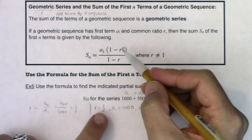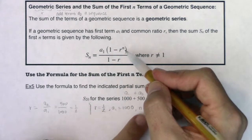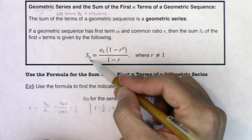Well, I was given three of those. I was given the r value, I was given a sub 1, I was given that n was 20, so I can find s sub 20.